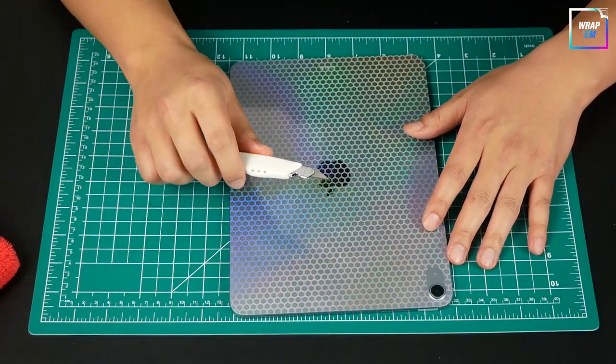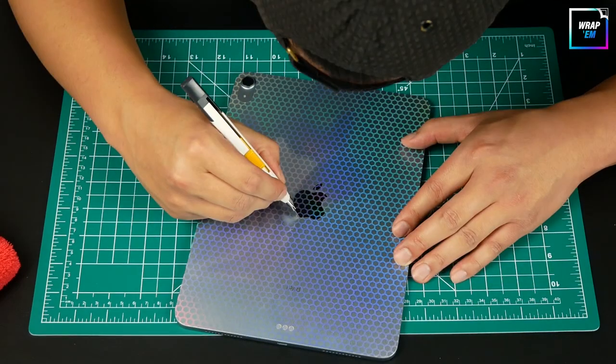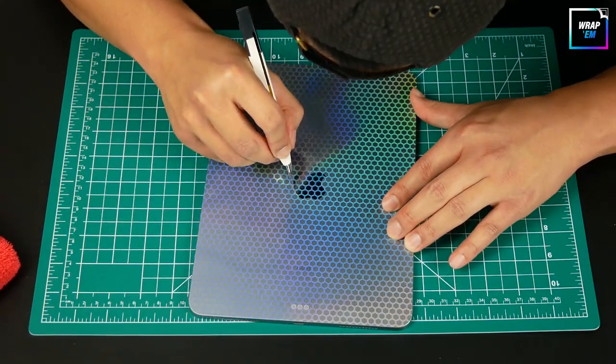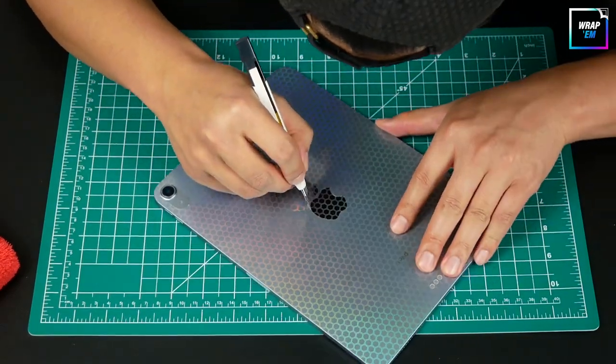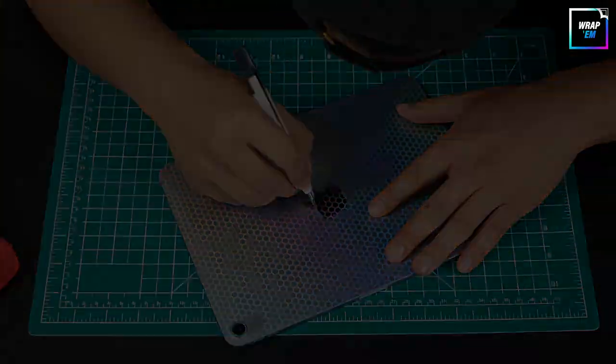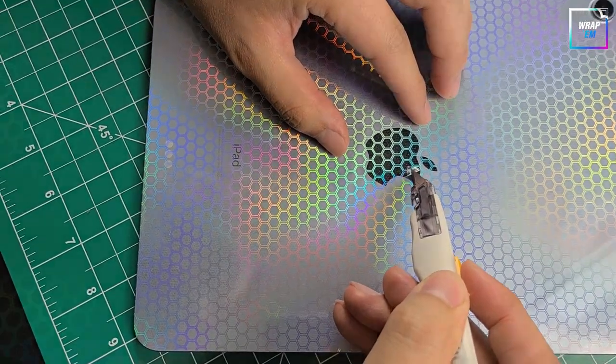Once you're done creasing, grab the blade and start cutting along the crease. It's really important that you use a very sharp and clean blade. Now just peel away the cutout.